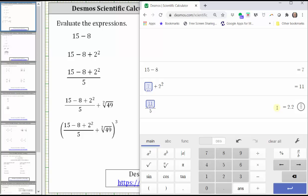To convert to fraction form, click the circle on the right, which gives us 11 fifths.